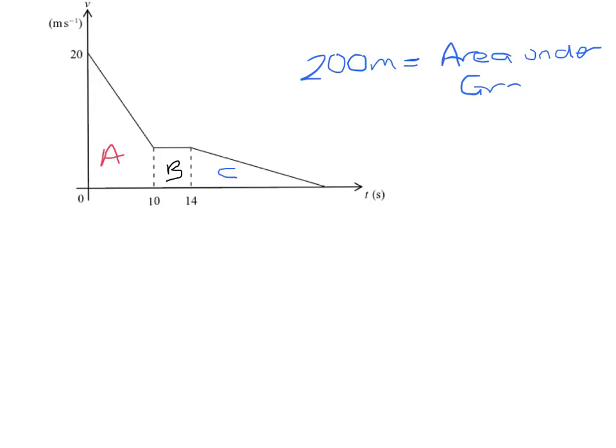I've split the graph into three sections, A, B, and C. A, we've previously worked out, is 125. B is a rectangle, 4 by 5, so that will be 20 meters.